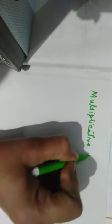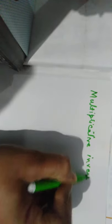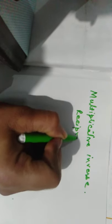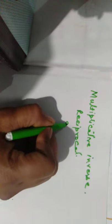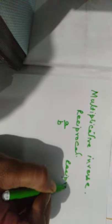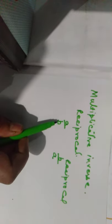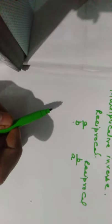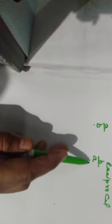Multiplicative inverse means the reciprocal. For a upon b, the reciprocal is b upon a. So b upon a is said to be the multiplicative inverse of a upon b, and a upon b is said to be the multiplicative inverse of b upon a.